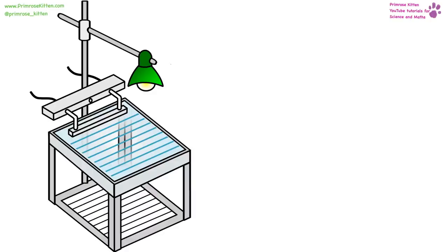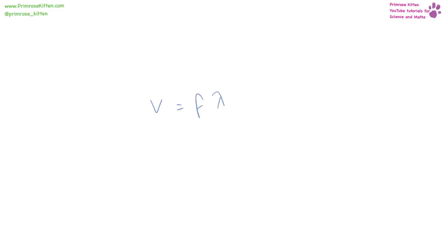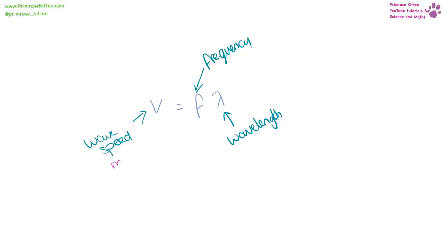To measure wave speed, use a ripple tank — a vibrating bar creates waves in water. Measure the wavelength and count how many waves pass a point per second for frequency. Then use the equation: wave speed v equals frequency times wavelength (v = fλ). Speed in meters per second, frequency in hertz, and wavelength in meters.